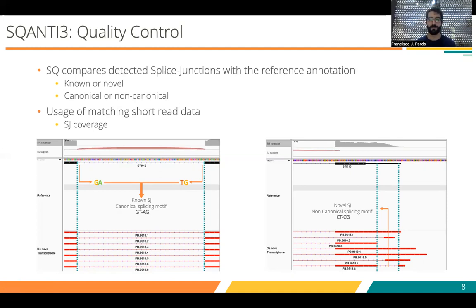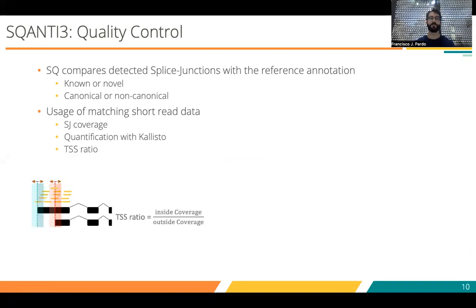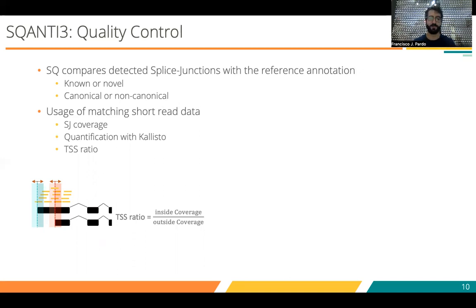SQANTI also runs internally, using the short-read data with Kallisto to quantify the isoforms that were detected. It also computes what we call a TSS ratio. For the TSS ratio, we define a boundary at the TSS and measure the coverage in the first 100 base pairs downstream the TSS, and upstream the TSS is considered outside. We calculate this ratio to know if there is actually significant expression at that TSS. If the TSS is actually true, we expect a really high TSS ratio — at least higher than 1.5 or 2.